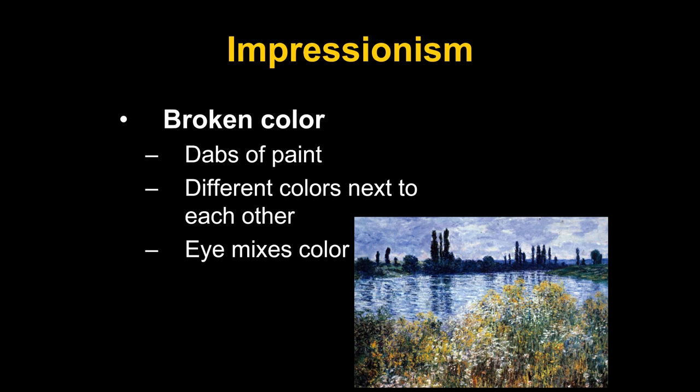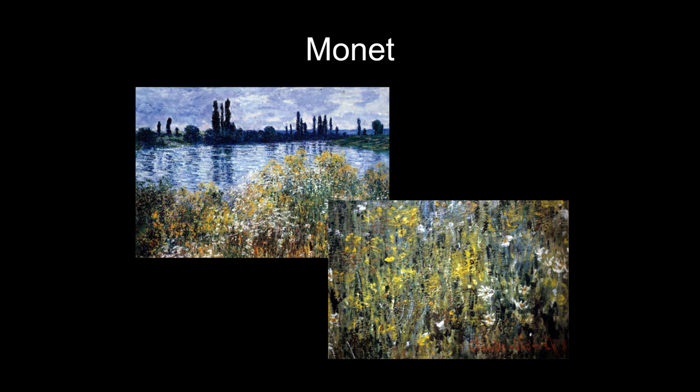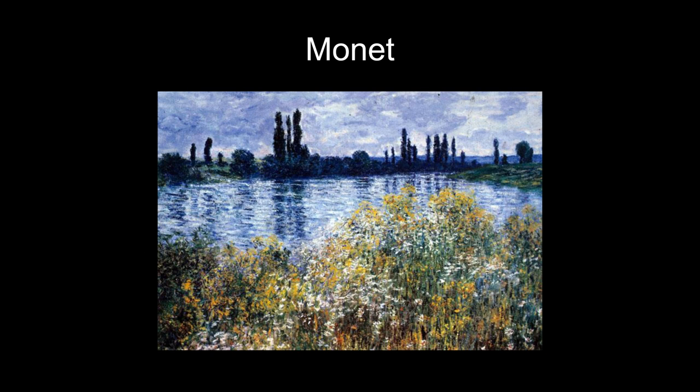The theory was that the eye would mix the color — if you put blue next to yellow, your eye would see green. Actually, of course, you're frequently very much aware of the different hues, and it makes a very lively surface. But think about it: light is all colors, so it makes sense to use many different hues. You can also see that the paint can be very thick in places — a real texture to the surface.